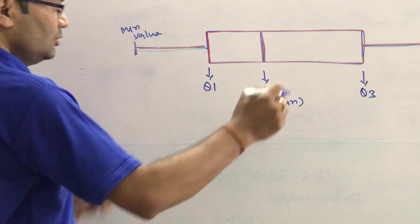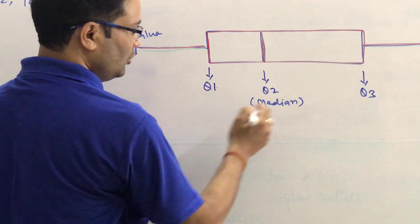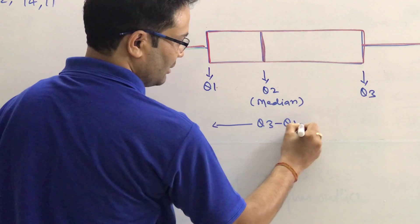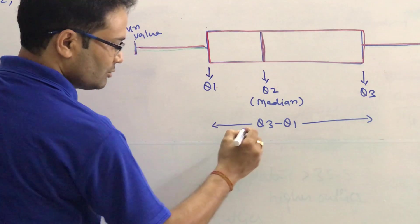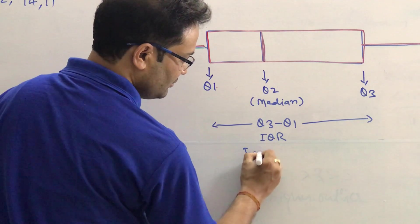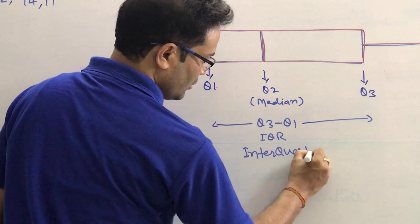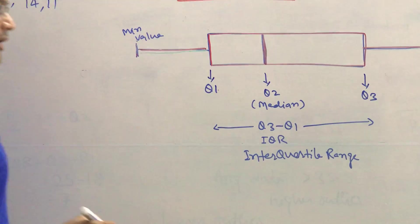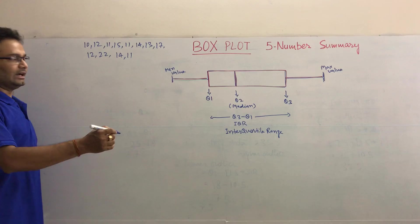This is the mean value of your data set, and this is the max value. The difference between Q3 minus Q1 is also called the IQR, the interquartile range.